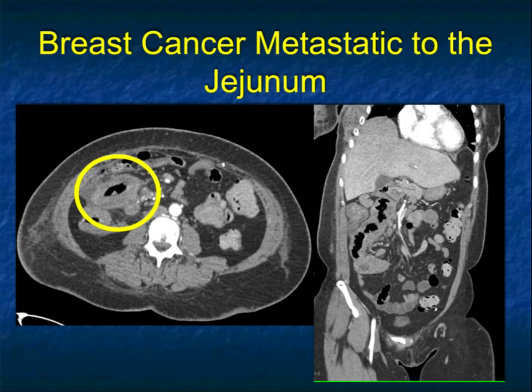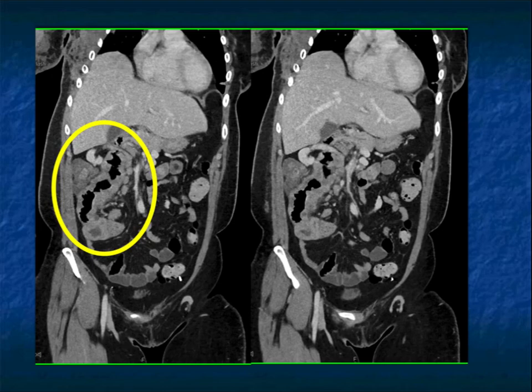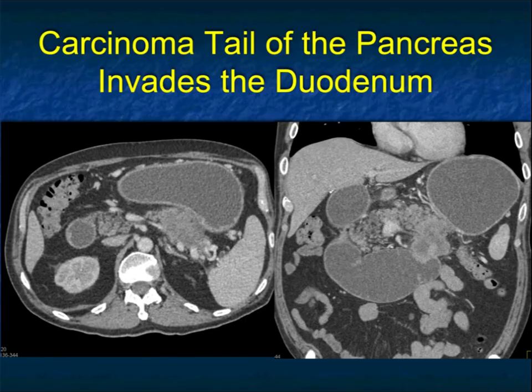Breast cancer: we talk about breast involving the stomach as linitis plastica, but also the small bowel. This patient had nausea and vomiting. The thickening of the bowel looks like a primary adenocarcinoma — you see the length of the lesion on the coronal view, with ulceration. I would have said adenocarcinoma or maybe lymphoma. This was metastatic breast cancer. Breast cancer can go to the stomach, small bowel, ureters, bladder, and kidney — one of the challenges of metastatic breast cancer.